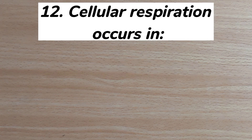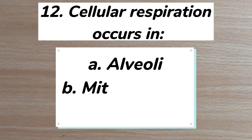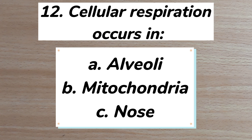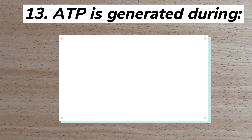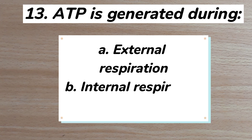Number twelve: cellular respiration occurs in A) alveoli, B) mitochondria, C) nose. The correct answer is B: mitochondria. Number thirteen: ATP is generated during A) external respiration...